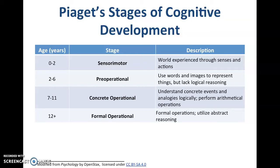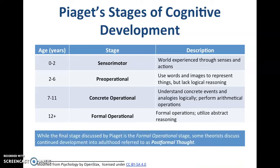Ages seven to eleven, middle childhood, is the concrete operational stage, when kids are able to understand and engage with the world they're a part of — starting to think more logically and perform simple arithmetic operations. Then in adolescence, age twelve and up, is the formal operational stage, where kids start using formal operations and thinking about the world abstractly. Since we're looking at lifespan development, we'll also be introduced to post-formal thought — theorists who follow Piaget but continue to discuss ways cognition changes and develops into the adult years.